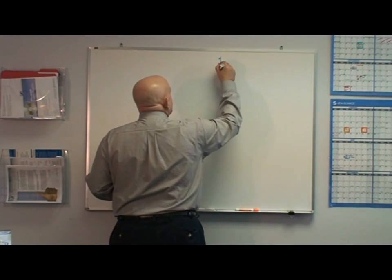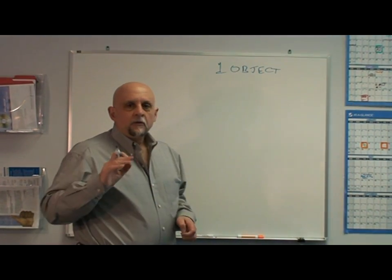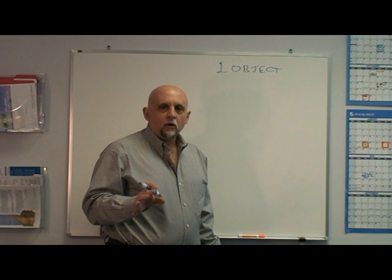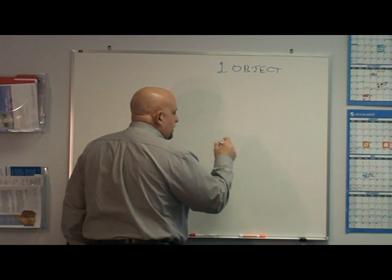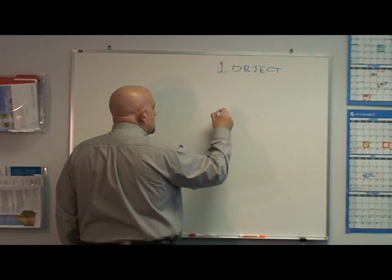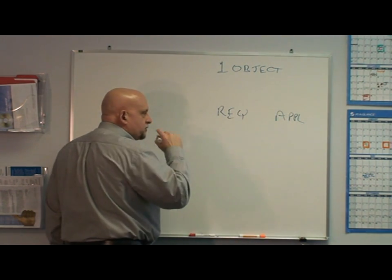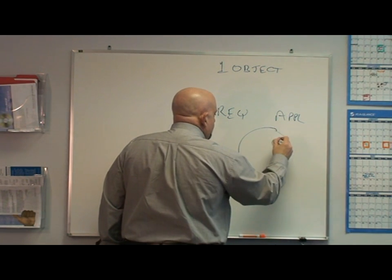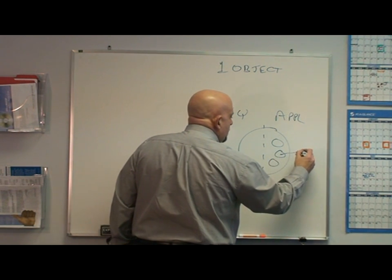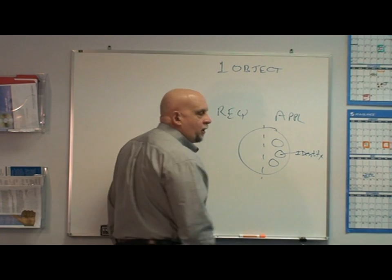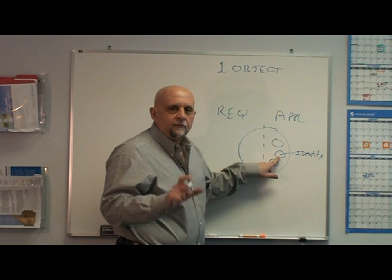Number one, you need to know that DeviceNet is object-based. That means the external view of every device on a DeviceNet network looks like a set of objects. There are two kinds of objects: there are required objects and there are application objects. The identity object would be one of the prime objects that you find in every device — it's simply a collection of like data.